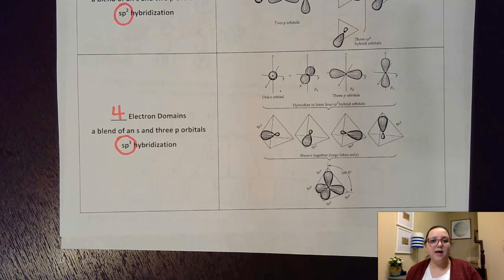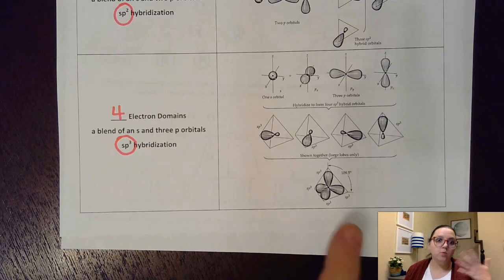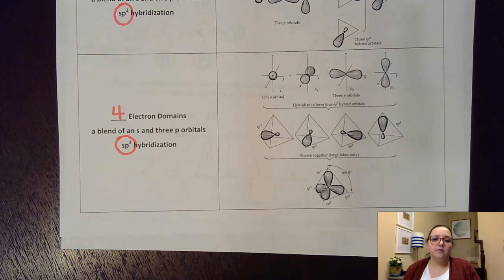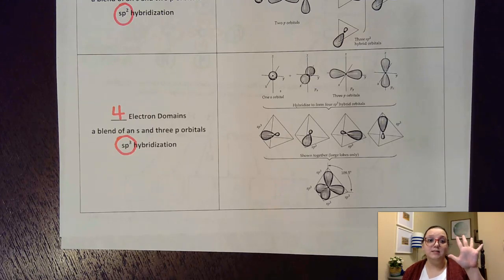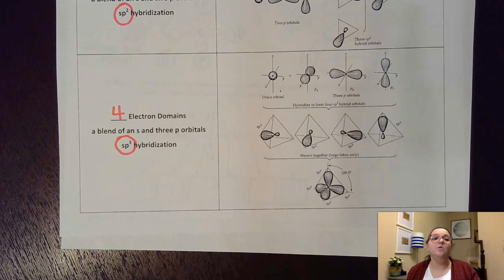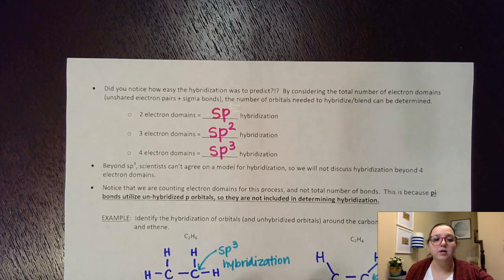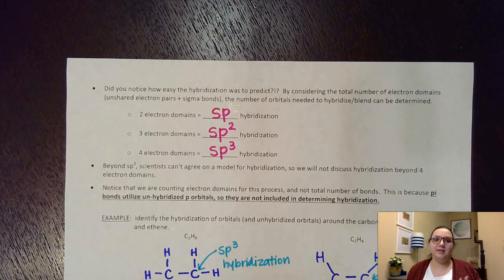Now I know some of you know that we obviously have expanded octet molecules where you would have more than four electron domains — you might have five or six electron domains. For those, scientists actually can't totally agree on what the hybridization would look like. The idea is that you might eventually start to add on D orbitals. For example, some scientists think that if you had five electron domains, you would have your S cloud, your three P clouds, and also a D cloud, giving you an SP3D hybridization. However, since scientists can't agree on that, AP Chem doesn't require you to know the hybridization for those advanced structures — only these three: two electron domains is SP, three electron domains is SP2, and four electron domains is SP3. It really is that easy.